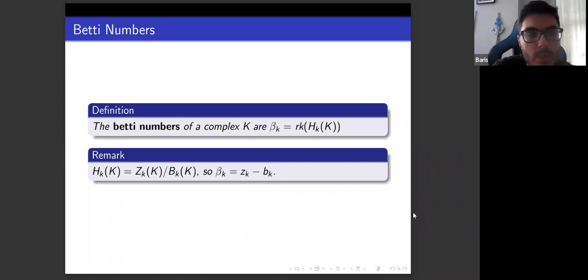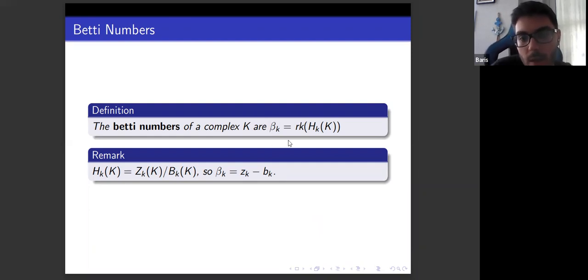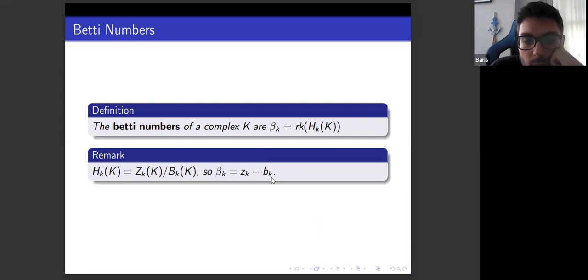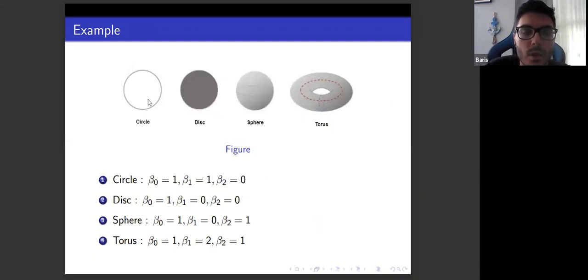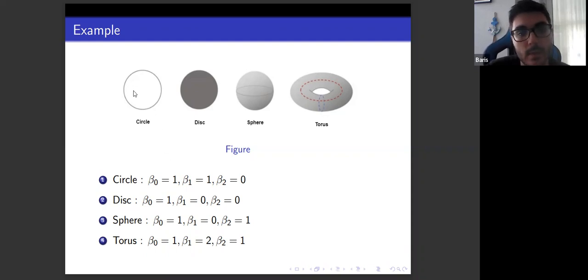Finally, let's define the Betti numbers. The k-th Betti number is the number of k-dimensional holes of the shape. Betti numbers are topological invariants, denoted by beta_k, and equal to the rank of the k-th homology group. It can be computed as z_k minus b_k, where z_k is the rank of the cycle group and b_k is the rank of the boundary group. For the circle: beta_0 equals 1 (one connected component), beta_1 equals 1 (one-dimensional loop), and beta_2 equals 0 (no two-dimensional hole).